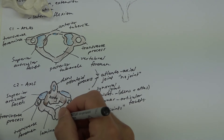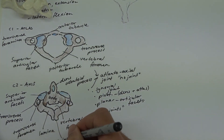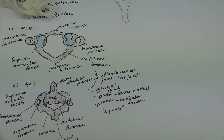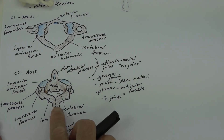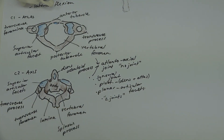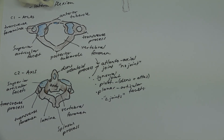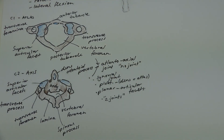The spinous process of C2 is actually the first one you can feel. If you feel on the back of your skull and palpate just downwards, there's a soft spot immediately underneath the skull, and with your neck flexed the first bony prominence is the spinous process of C2. From there they reduce in size — C3, C4, C5 is the smallest — then C6 and C7 is the largest. Depending on your bony anatomy, you may feel these better than others.